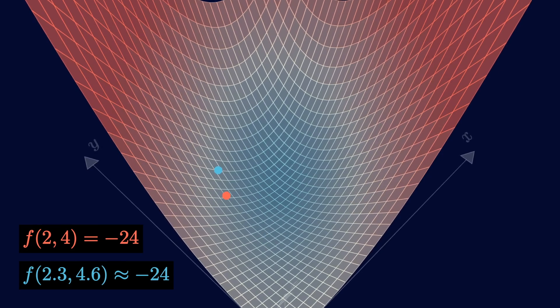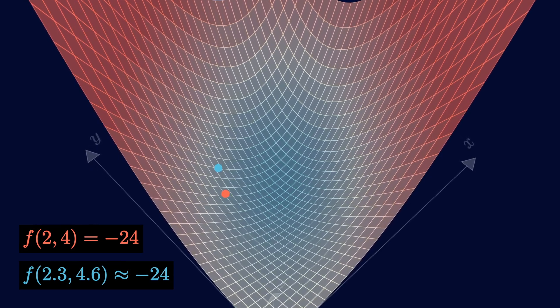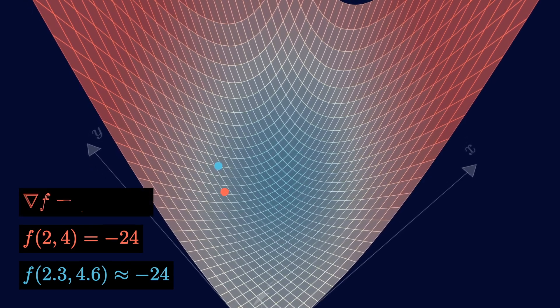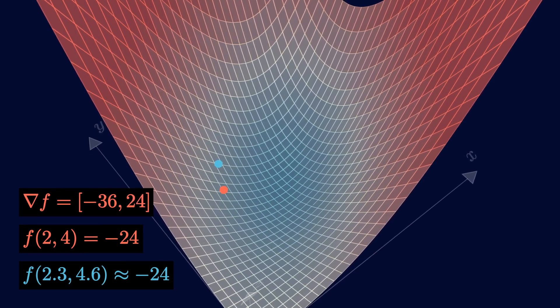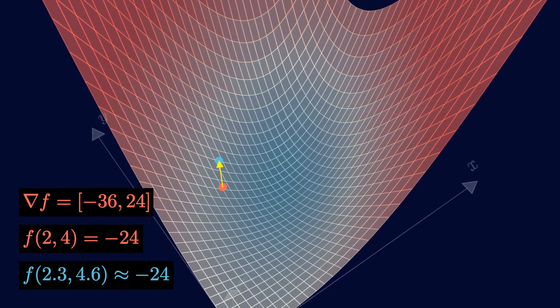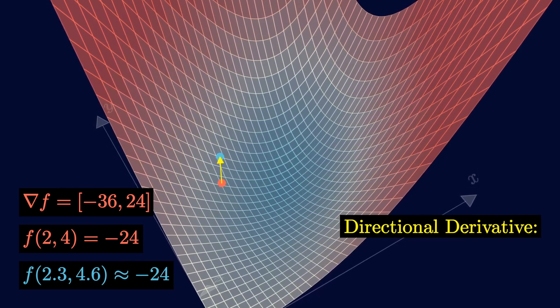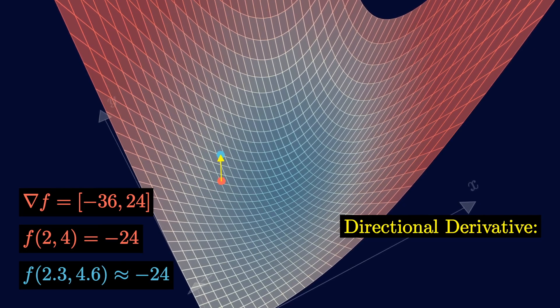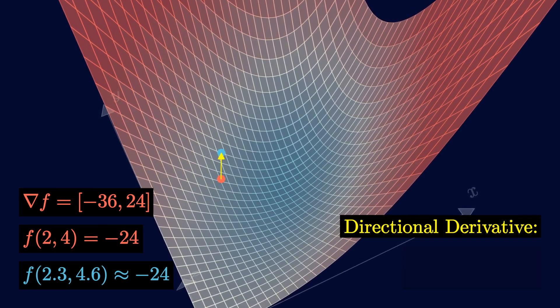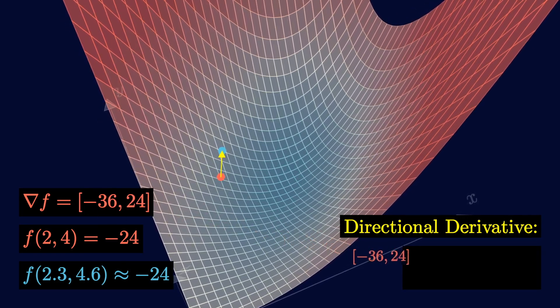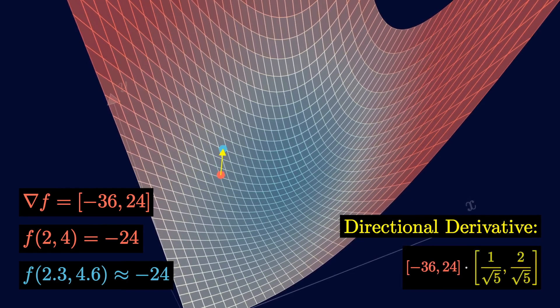Things change when I give you more information. Like if I give you the gradient at the red point, there's a lot more you can do now. With the gradient, you can find the directional derivative in the direction towards the blue point.